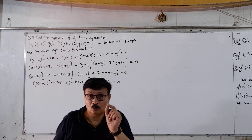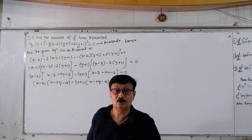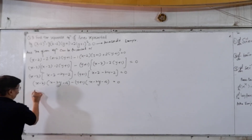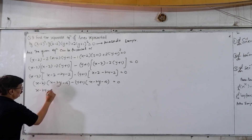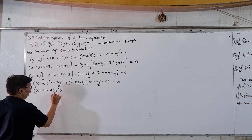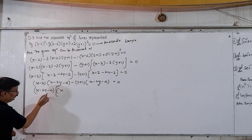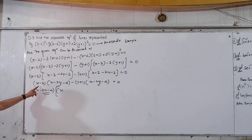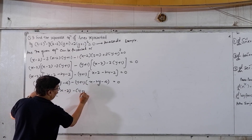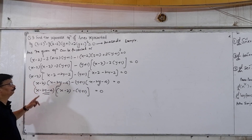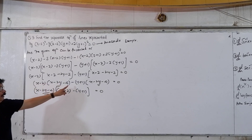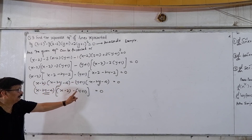Now look — in these two terms, which two terms are common? In both, the term (x minus 2y minus 4) is common. So I can take it common: (x minus 2y minus 4) multiplied by — what remains in both? After taking (x minus 2y minus 4) common, here remains (x minus 2), and here remains minus (y plus 1) equal to 0.